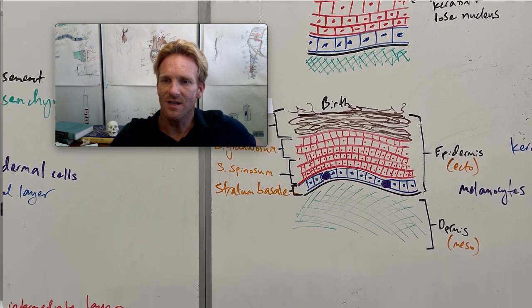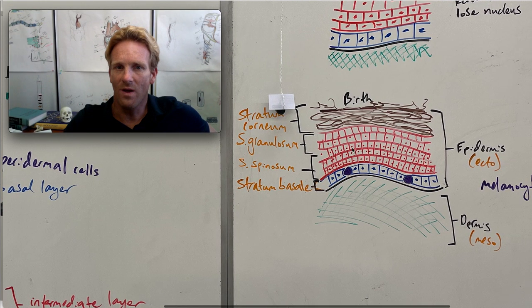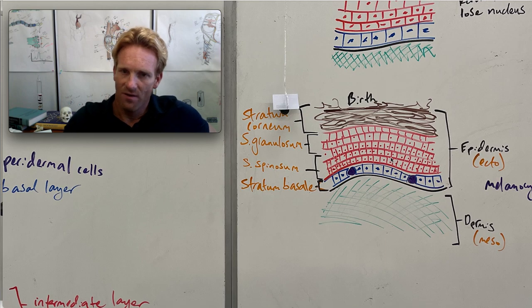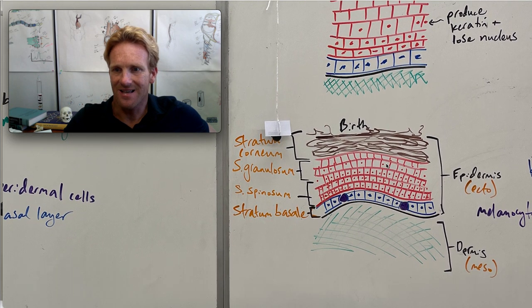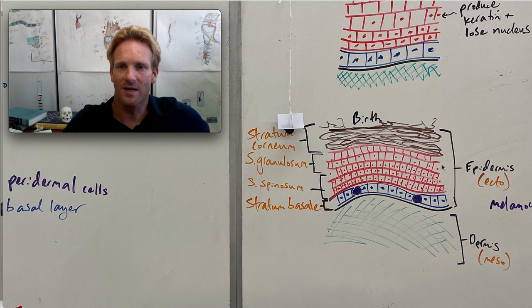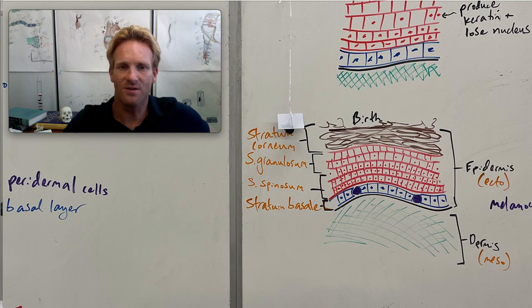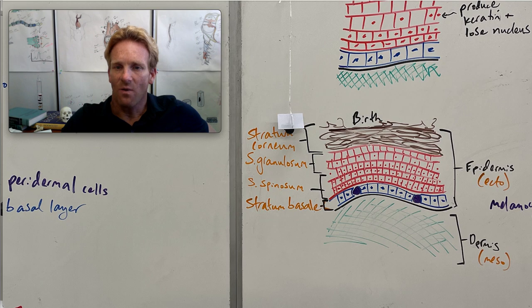This whole process is going to continue until we're pretty much left with the skin that looks like this at birth. So the outer layer of the skin which is derived from ectoderm, this is the epidermis, is going to consist of a couple of different layers. At the very bottom, this is called the stratum basale. It's going to consist of these keratinocytes, which are skin cells that are constantly dividing towards the surface.